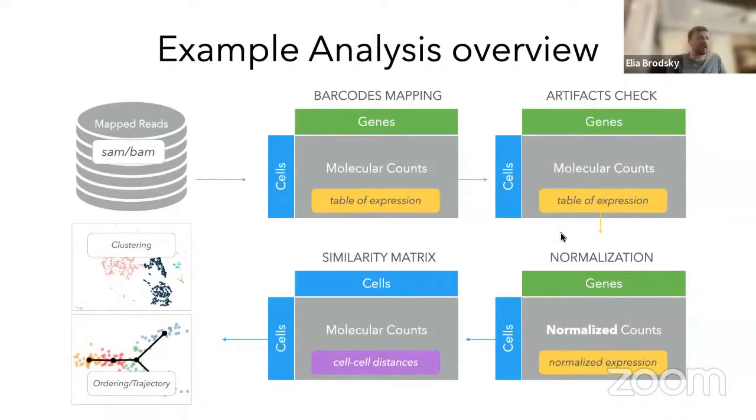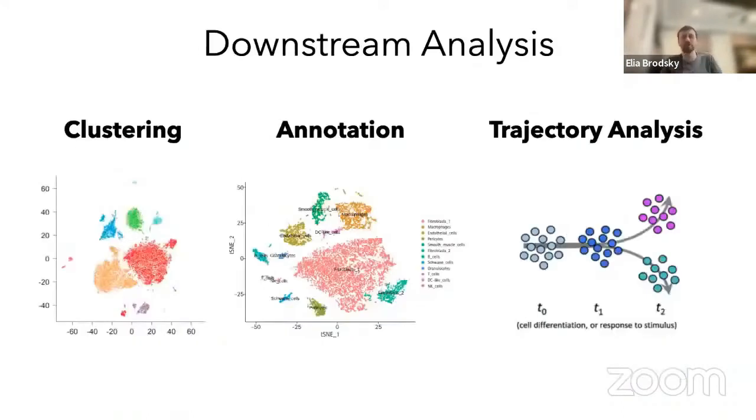And finally, we want to then understand differences between groups of cells. So let's now take a look at how do we go to this downstream analysis. Basically, we'll fall into these three major challenges of analysis: clustering, annotation, and analysis of a trajectory. And we'll talk about some use cases where these approaches are going to be most useful.